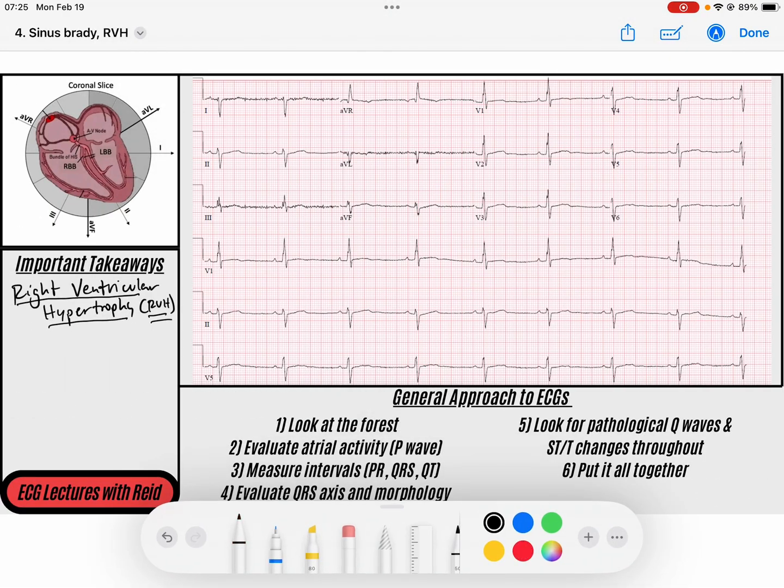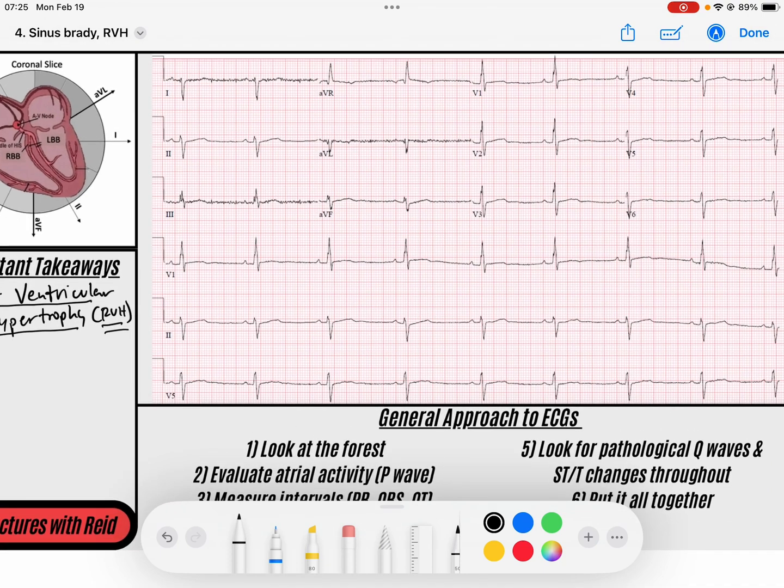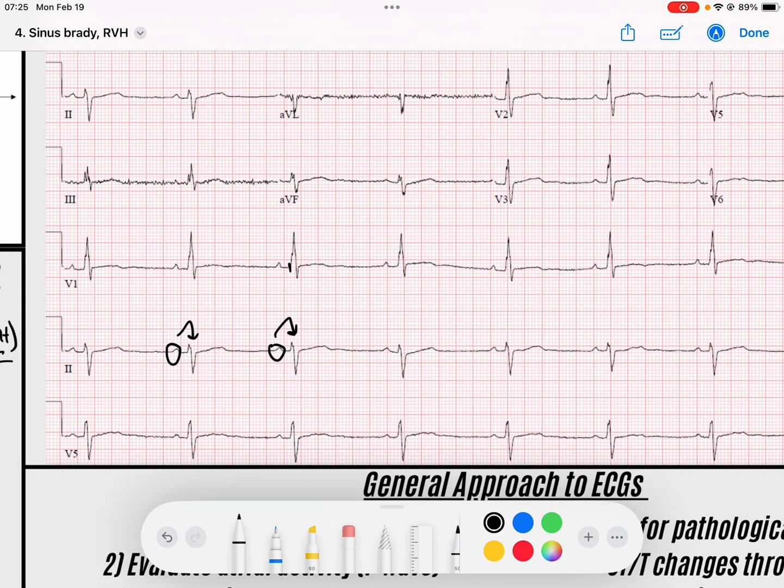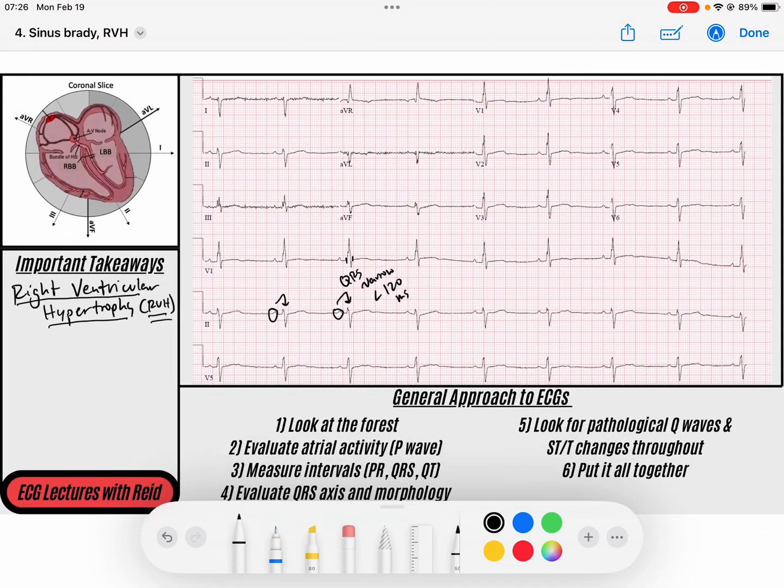Let's take a look at our ECG that has to do with right ventricular hypertrophy. In this case, we've got a sinus rhythm. Our P waves are conducting to our QRS complexes. When I look at my QRS, I see that it is narrow. My QRS is narrow, less than 120 milliseconds or less than three small boxes.